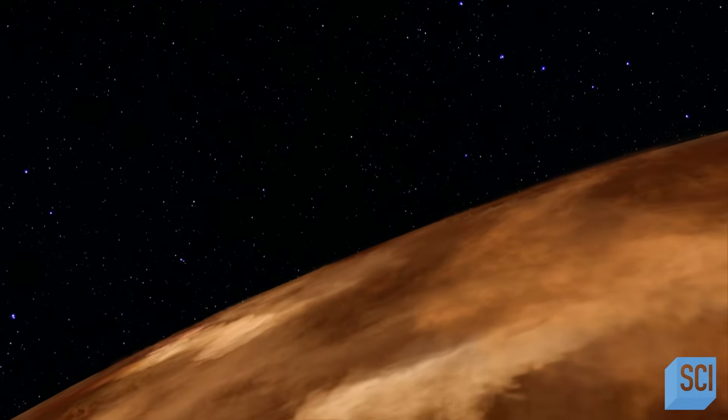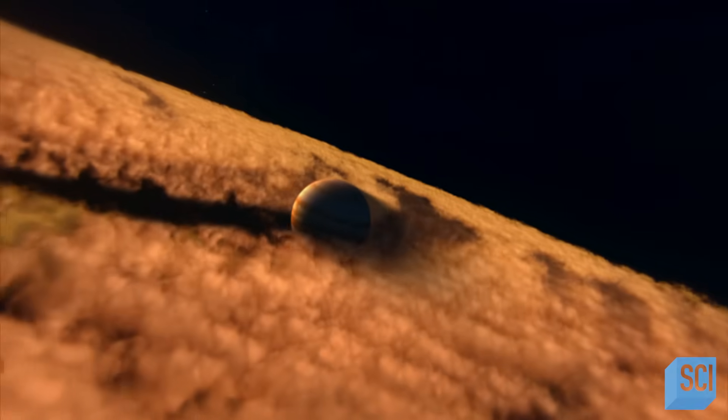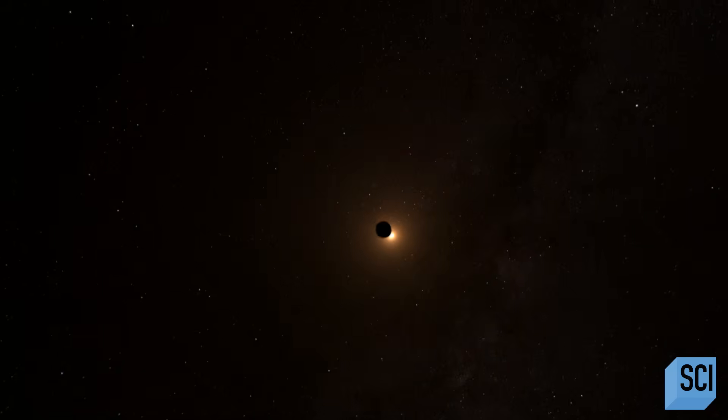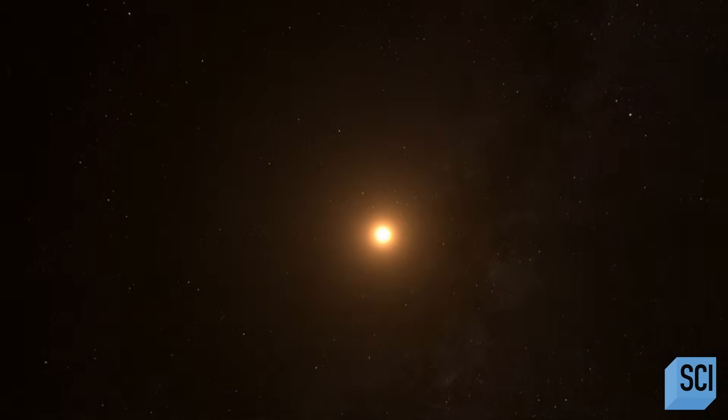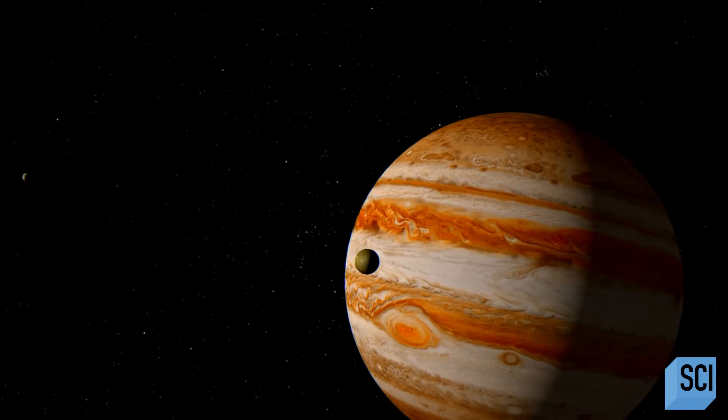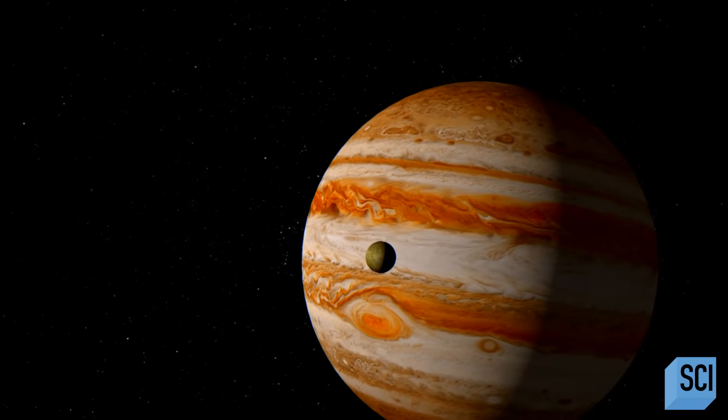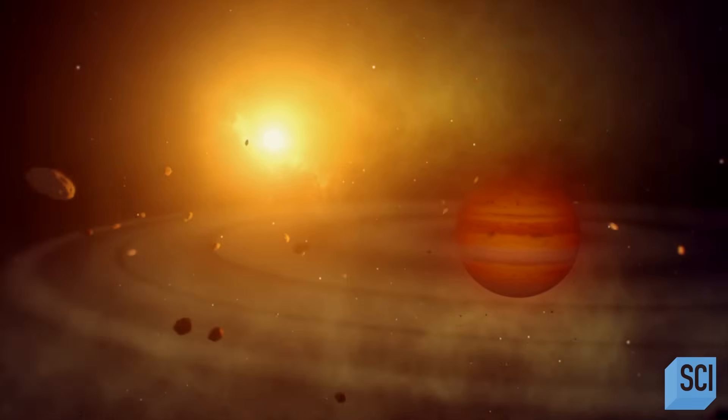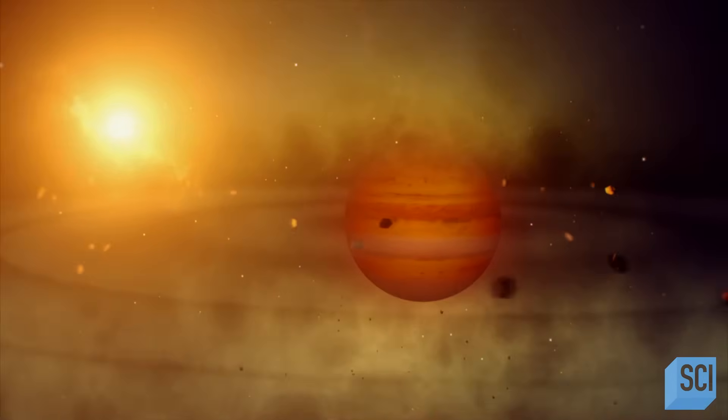A new theory suggests that Jupiter, the largest planet in our solar system, may have been responsible for sending the super-Earths to their doom. Today, Jupiter sits almost 500 million miles from the Sun. But in the early days of our solar system, Jupiter most likely migrated in towards the super-Earths.